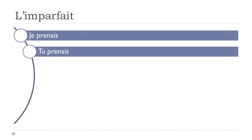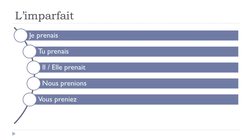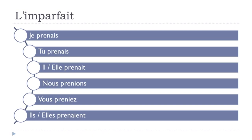For 'prendre' (to take): je prenais, tu prenais, il prenait, elle prenait, nous prenions, vous preniez, ils prenaient, elles prenaient. Remember to pronounce the 'e' clearly as in 'prenait'. Final -s and final -t are not pronounced, so je, tu, and il all sound the same. Plural ils/elles also sound like prenait. Nous prenions and vous preniez follow the same pattern.